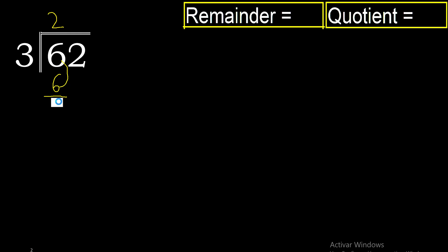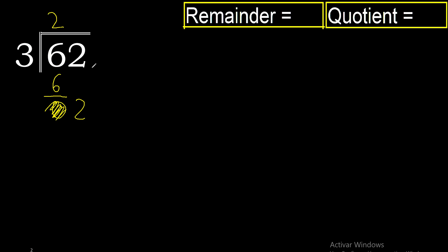6 minus 6 is 0, bring down 2. 02 is less than 3, therefore there is no number that goes further down, so we finish. Complete here with 0.